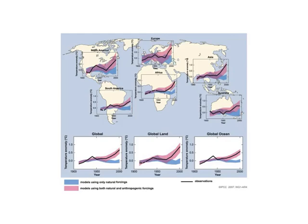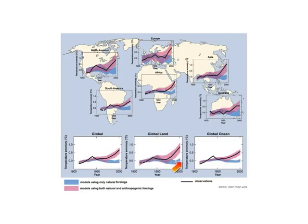So in each case, the black is what happened. The blue models have been taken and they have been told what nature did — what the sun was doing, what the volcanoes were doing. And the models then said, this is the climate change that nature has caused.